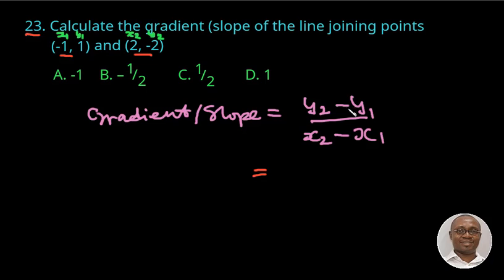With this we can substitute the given values as found in the coordinates. So y2 here is minus 2, minus y1 which is 1. This is what we have over x2 which is 2, minus x1 which is minus 1.